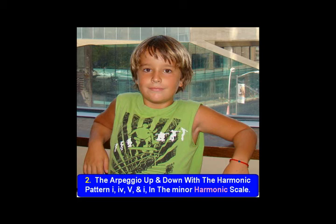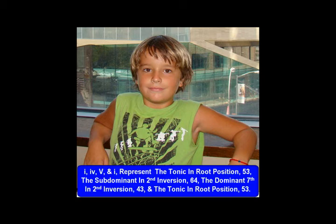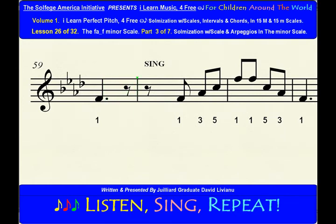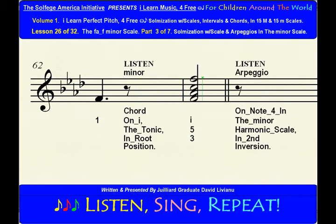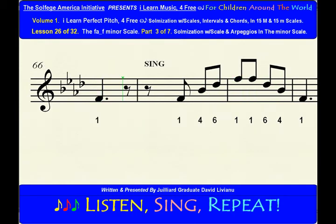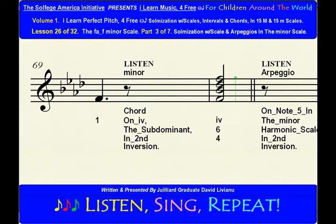The arpeggio up and down with the harmonic pattern 1-4-5-1 in the minor harmonic scale. 1-4-5-1 represents the tonic in root position (5-3), the subdominant in 2nd inversion (6-4), the dominant 7th in 2nd inversion (4-3), and the tonic in root position (5-3). 1-4-5-1 in the minor harmonic scale.